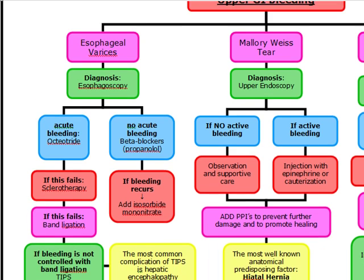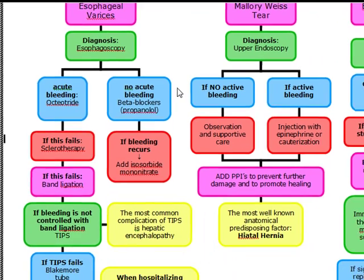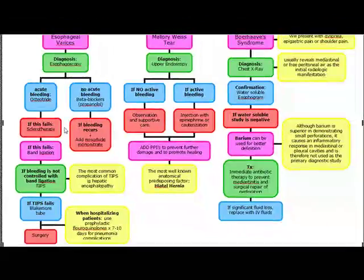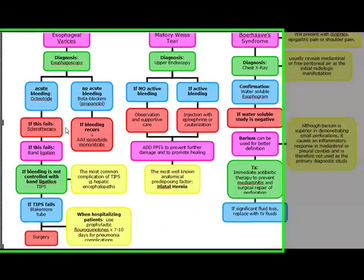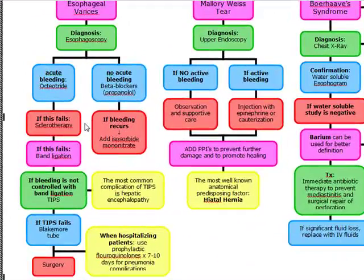If octreotide fails, we perform sclerotherapy. If sclerotherapy fails, we do band ligation. If bleeding is still not controlled after band ligation, we perform TIPS.